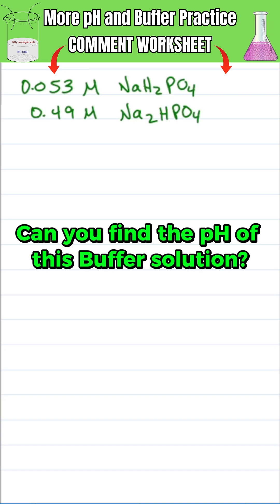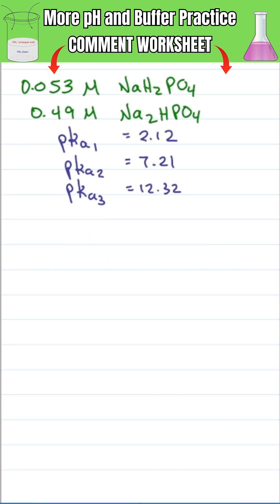Can you find the pH of this buffer solution given the following pKa values without a calculator? Because phosphoric acid is a triprotic acid where every time we lose a proton we have a different pKa value: pKa1, pKa2, and pKa3.